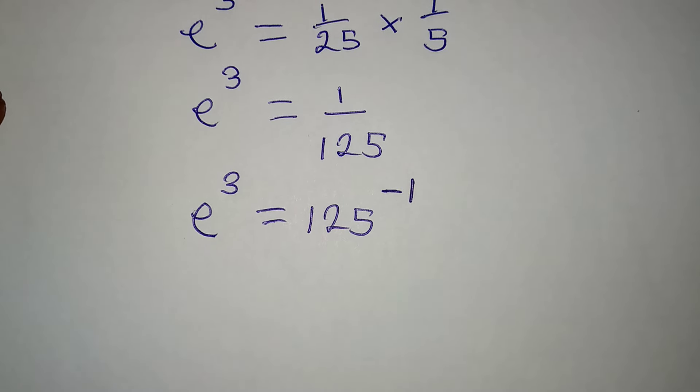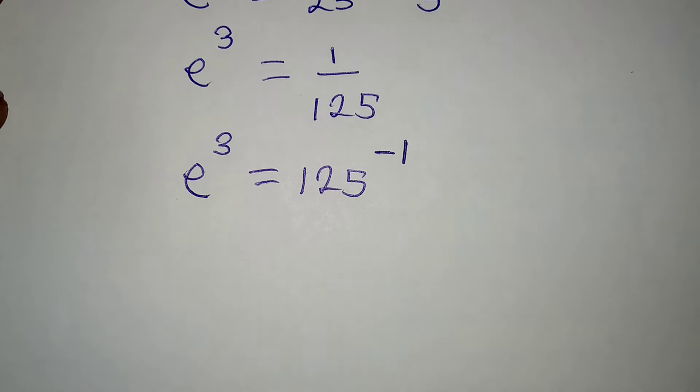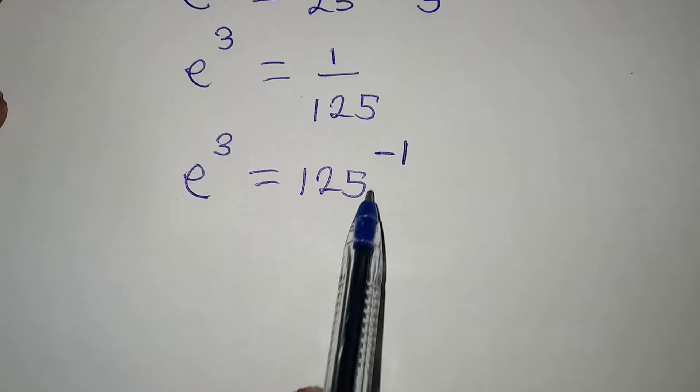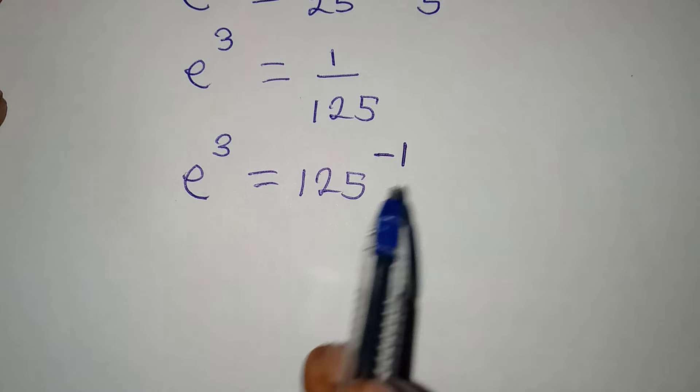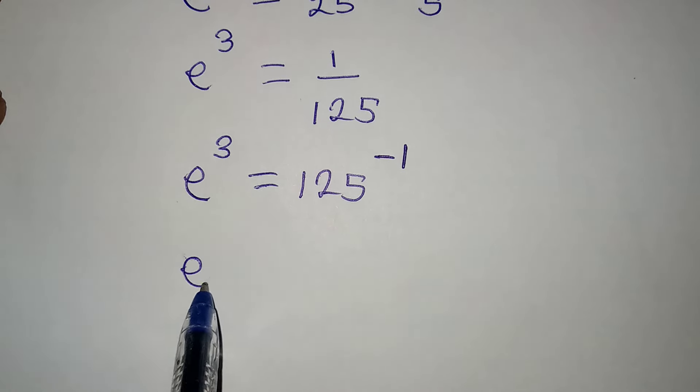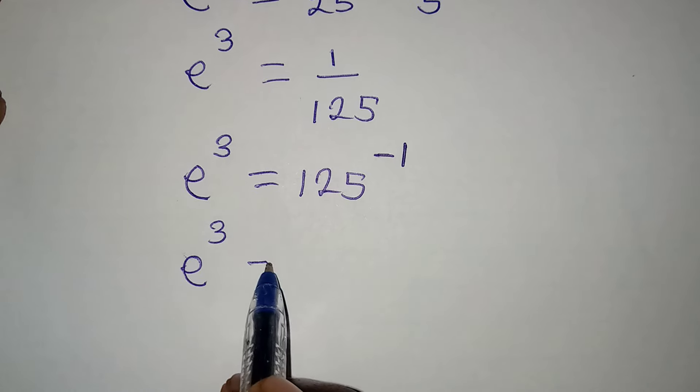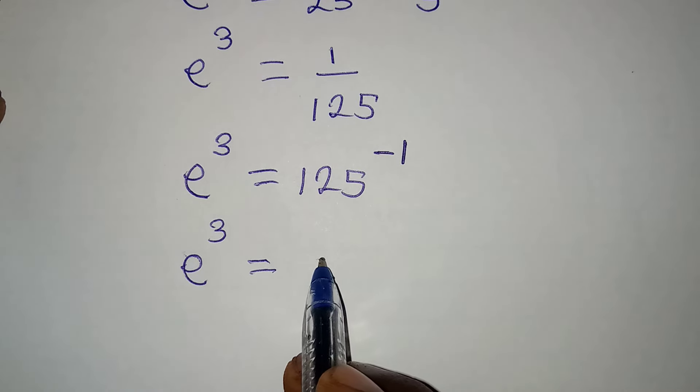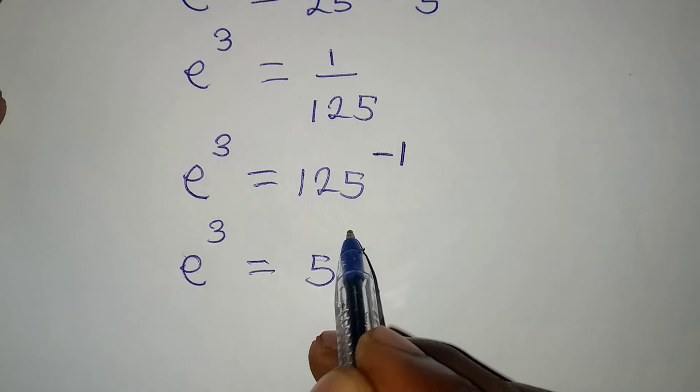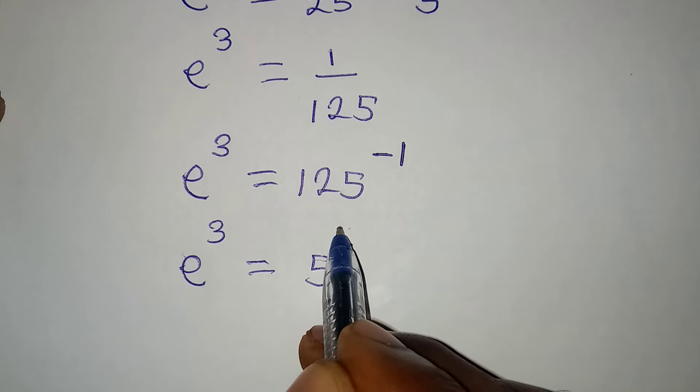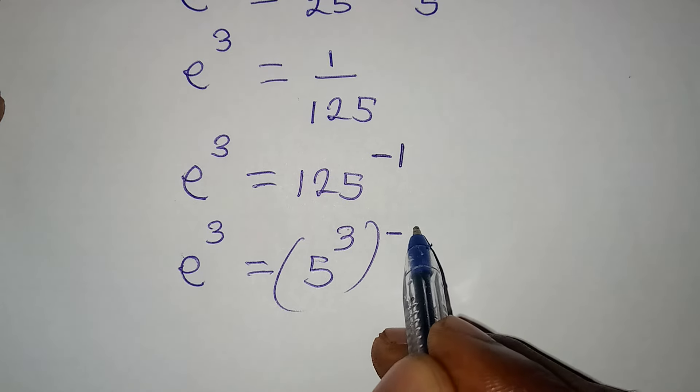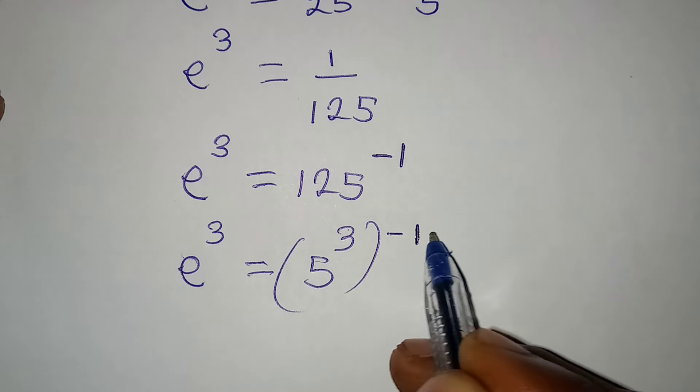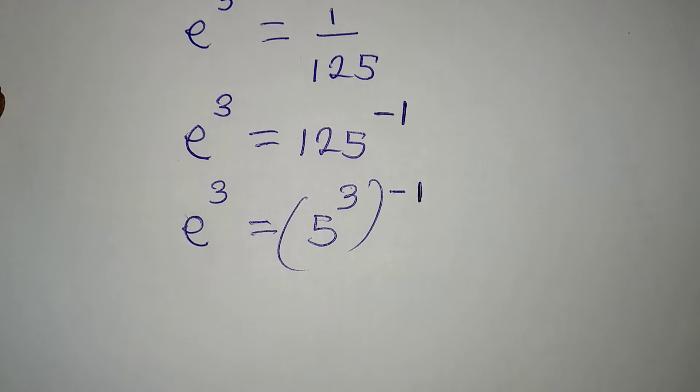Then, the next thing I'm going to do is to express this in index form. So I have e to the power of 3 to be equal to, here now, I'm going to have 5 to the power of 3. But remember that this is still to the power of negative 1.